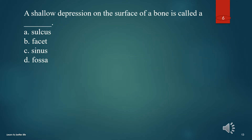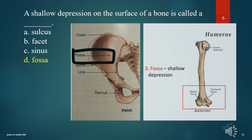A shallow depression on the surface of a bone is called a what? A. Sulcus. B. Facet. C. Sinus. D. Fossa. The answer is D. Fossa.